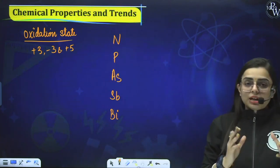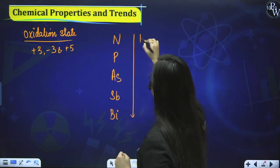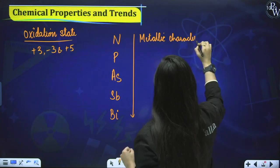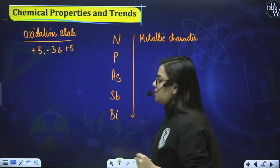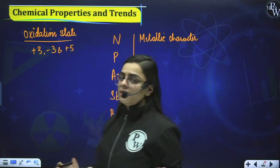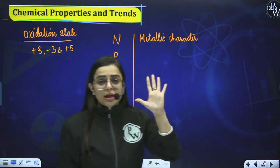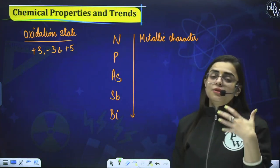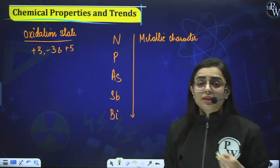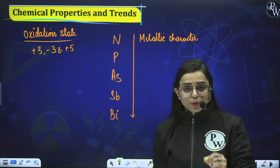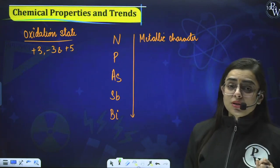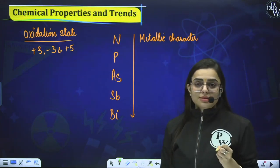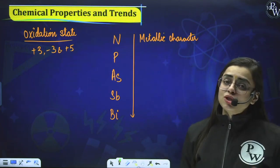When you move from top to bottom, what is the effect on metallic character? You should remember the five major tips I gave you in the previous session — understanding the topic, NCERT lines, solving homework questions, practice, and revision. Metallic character increases down the group.